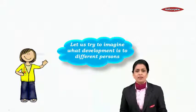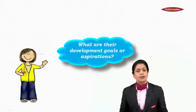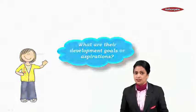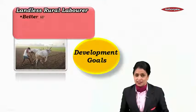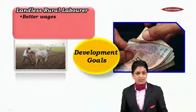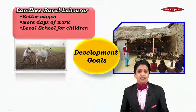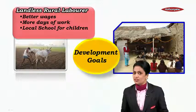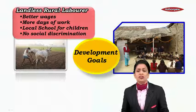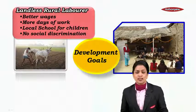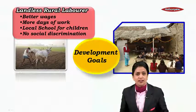Let us try to imagine what development is to different persons. What are their development goals or aspirations? The development goal of a landless rural labourer is he wants better wages, more days of work, a local school for his children so that they become educated, and no social discrimination. So there are four development goals of this landless rural labourer.